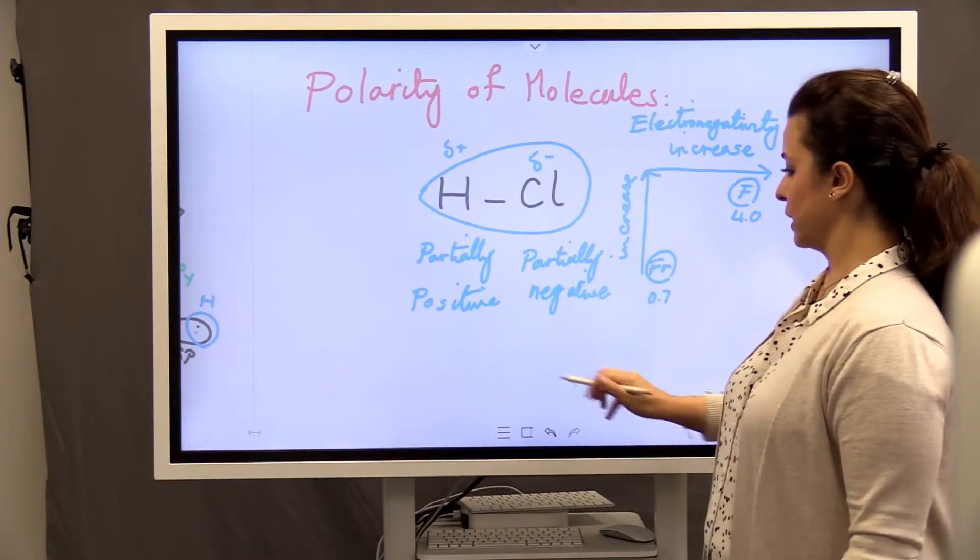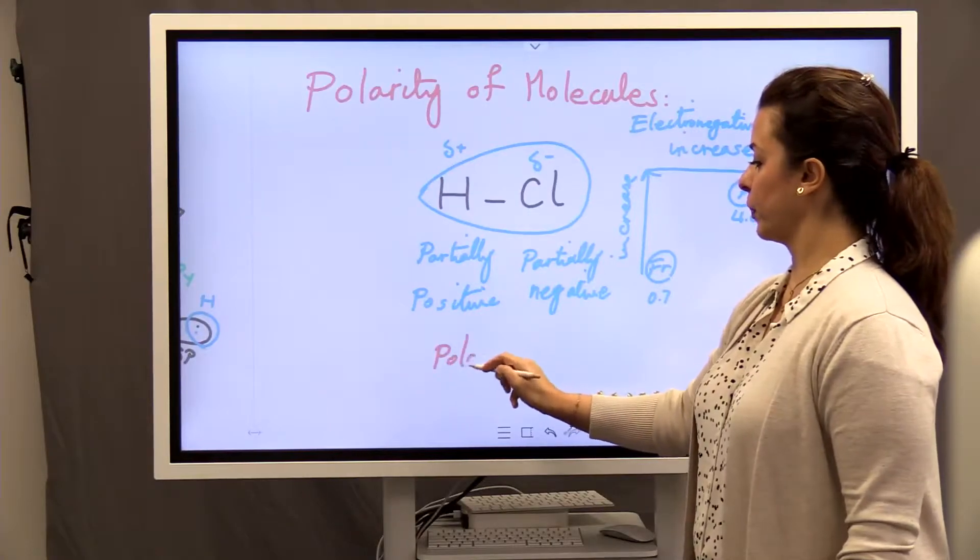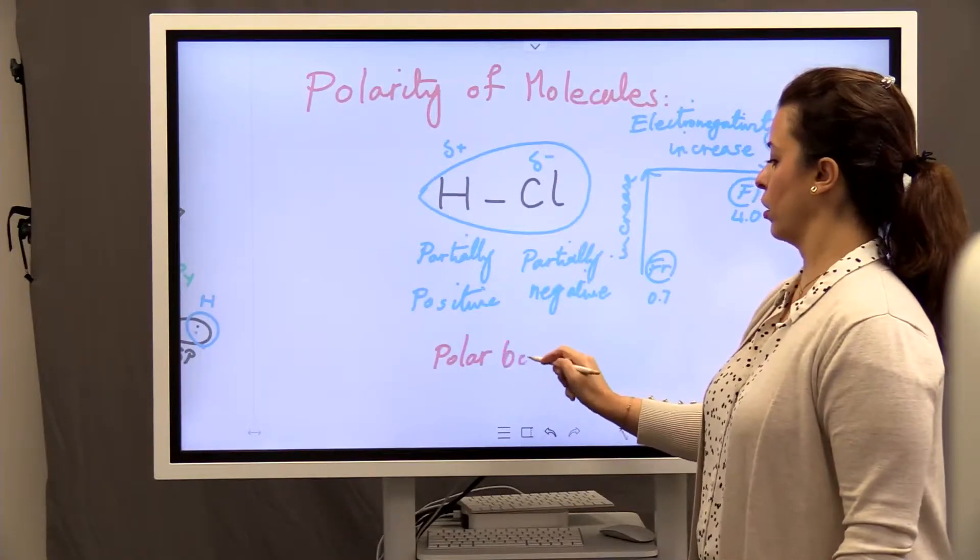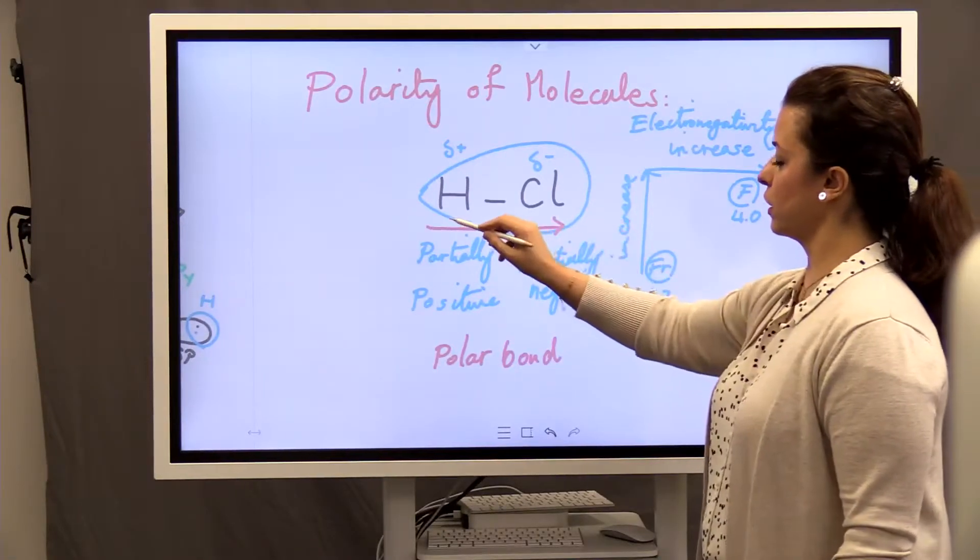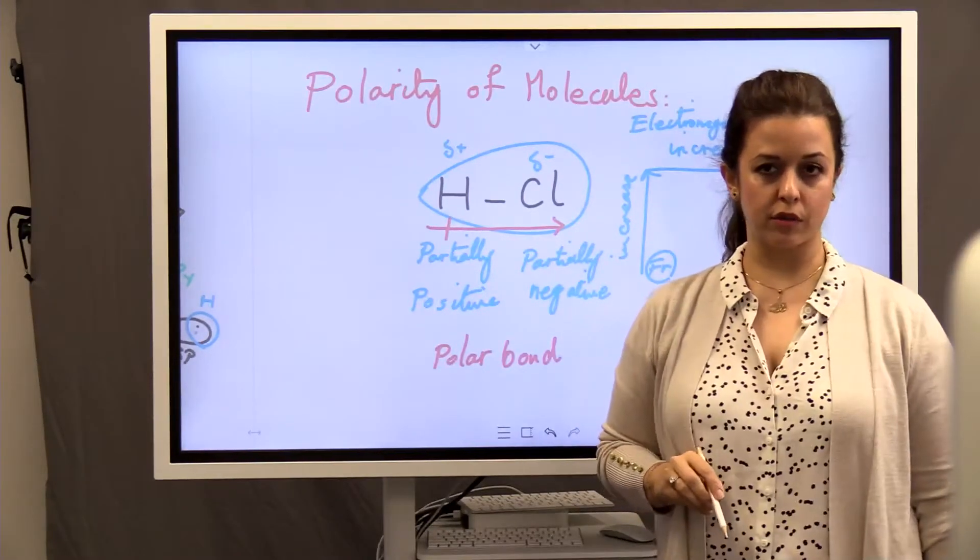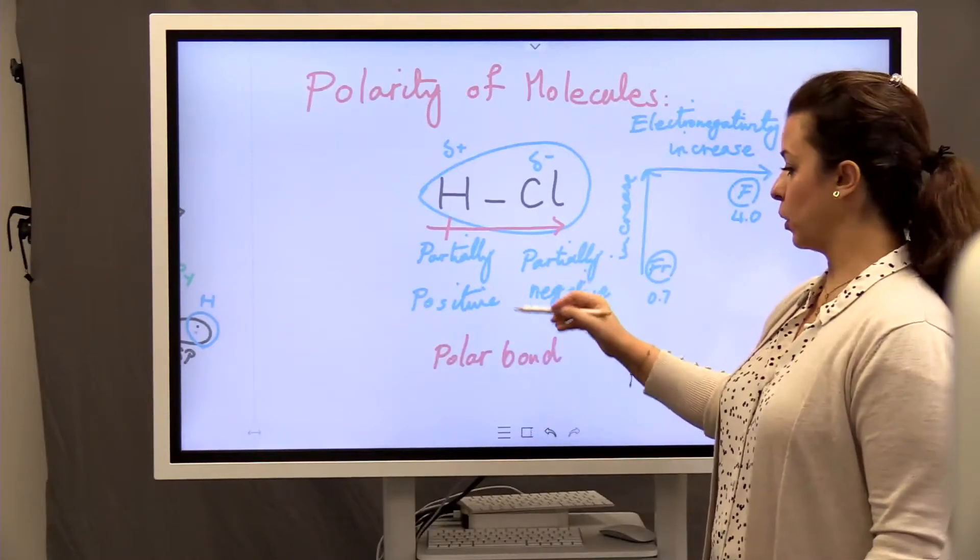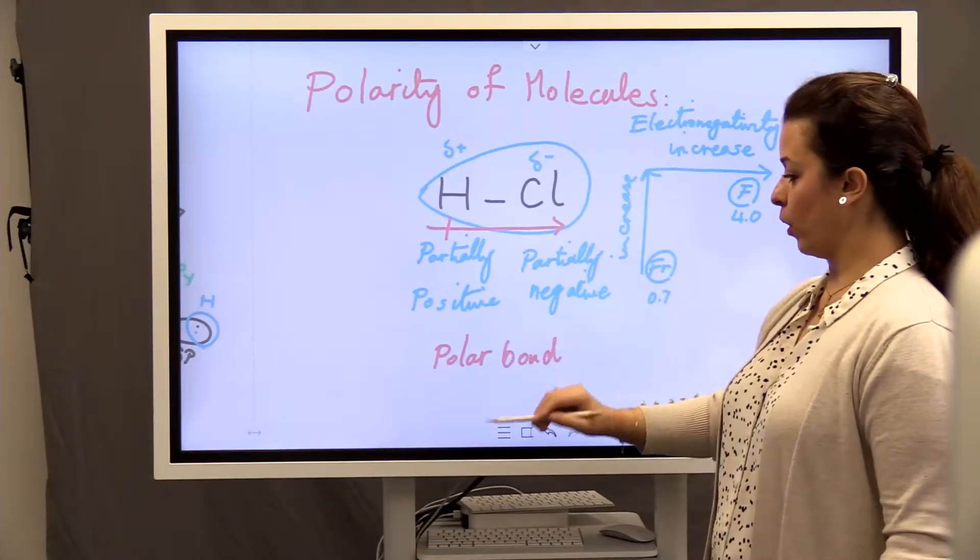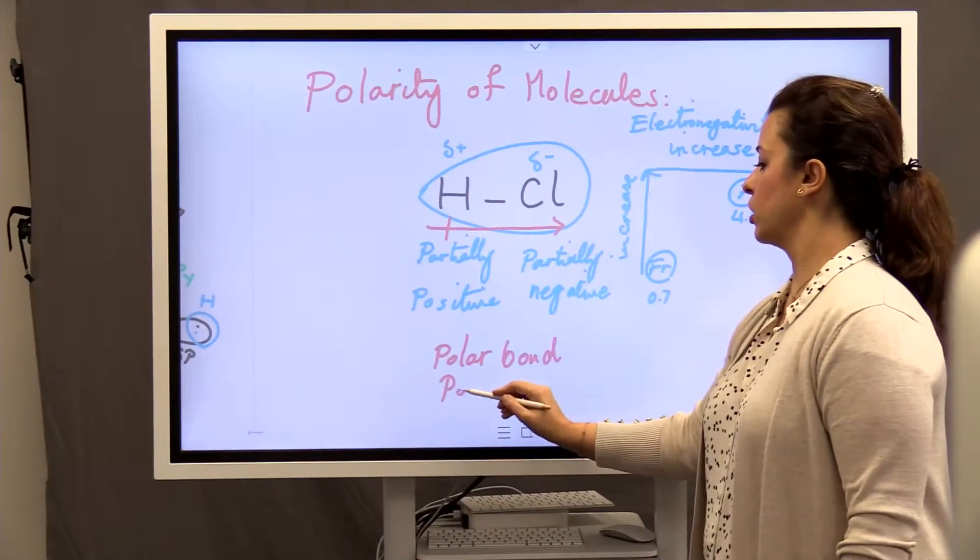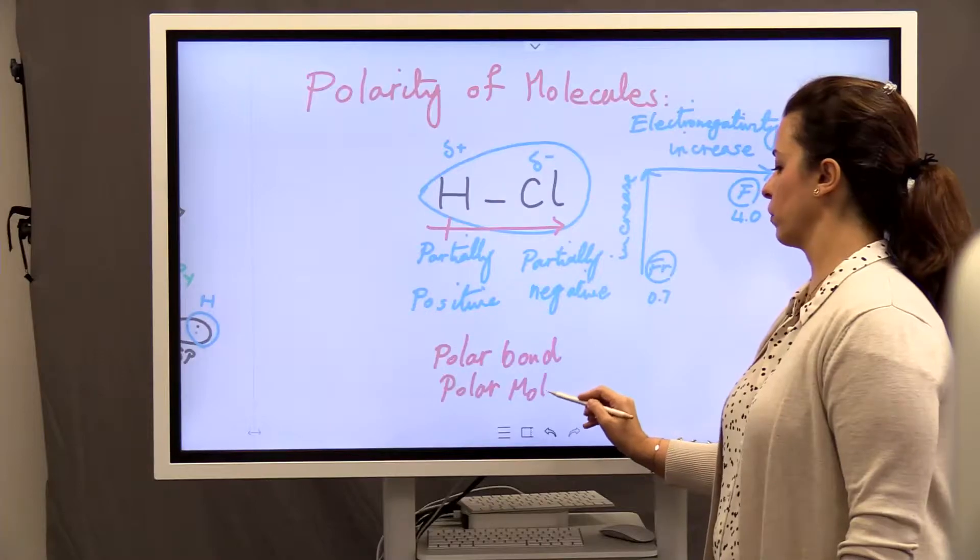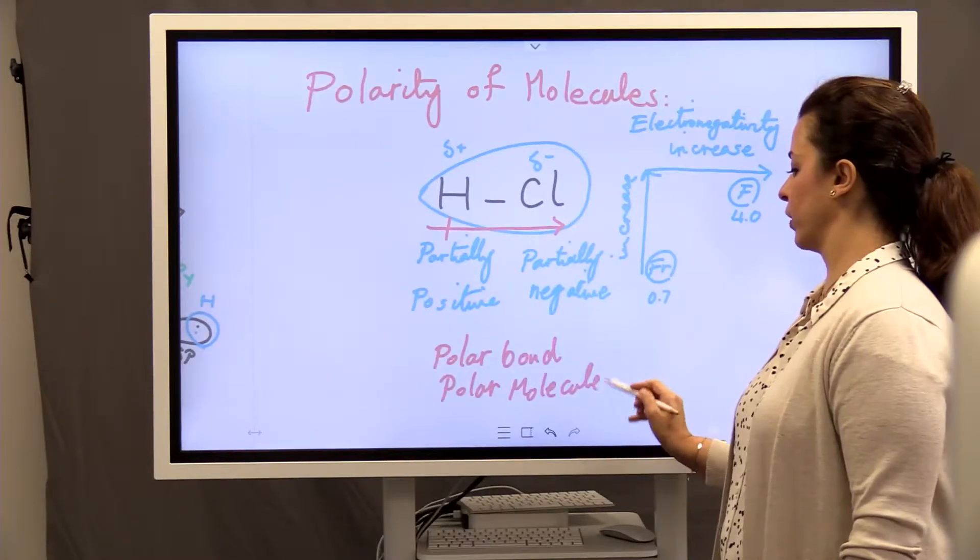So in this case, when the bond is polar, you can draw the dipole moment towards the negative center. Dipole moment. So a polar bond, and because this molecule just has one bond, you call it also a polar molecule. Okay?